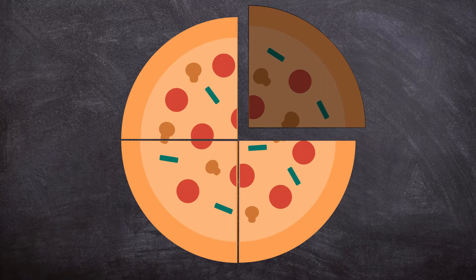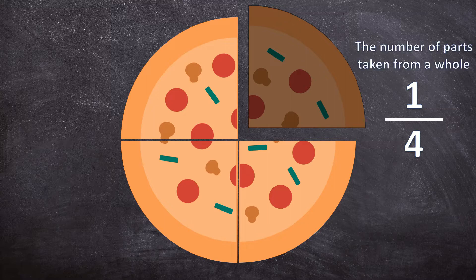So I didn't eat the whole pizza — I only ate one piece of the pizza. In other words, I ate a fraction of the pizza, and this is how we represent a fraction of a pizza. I ate one piece out of four pieces. The top number above the line is the number of parts taken from a whole, so I ate one part. The bottom number is how many parts make a whole — four equal parts make a whole pizza.